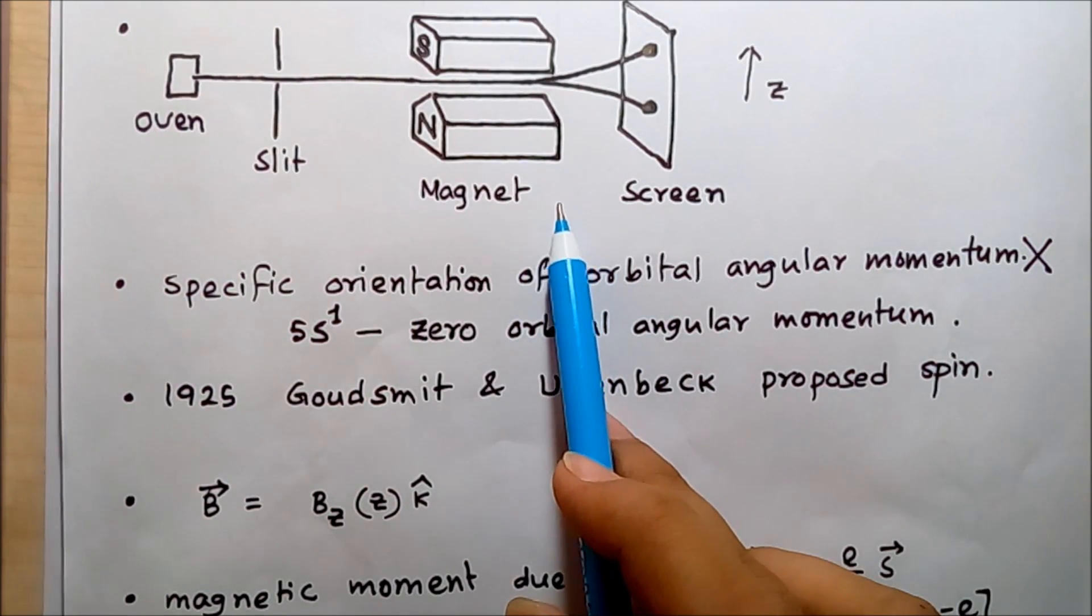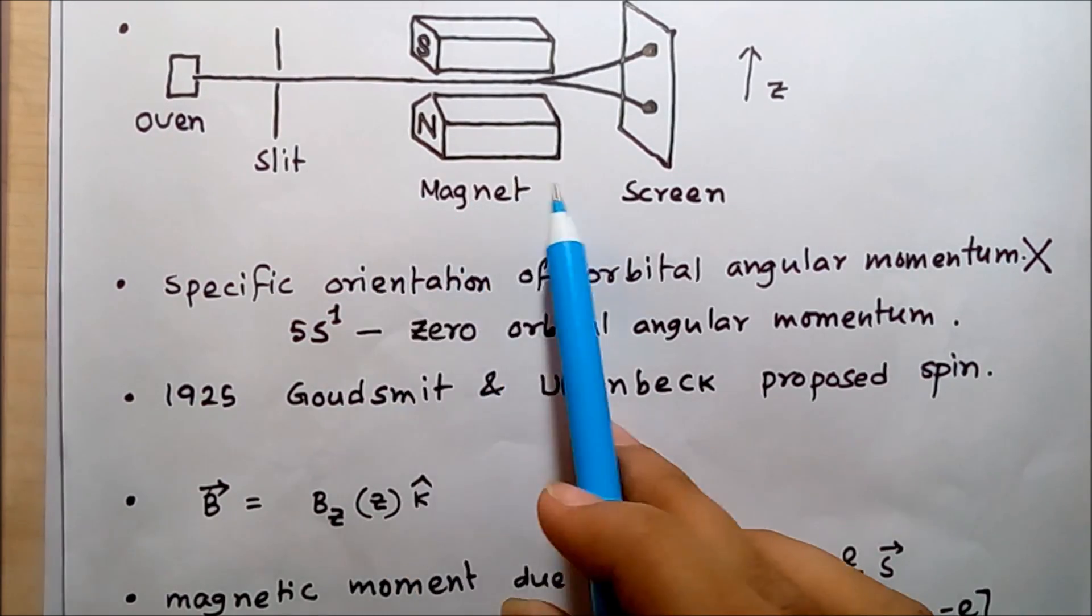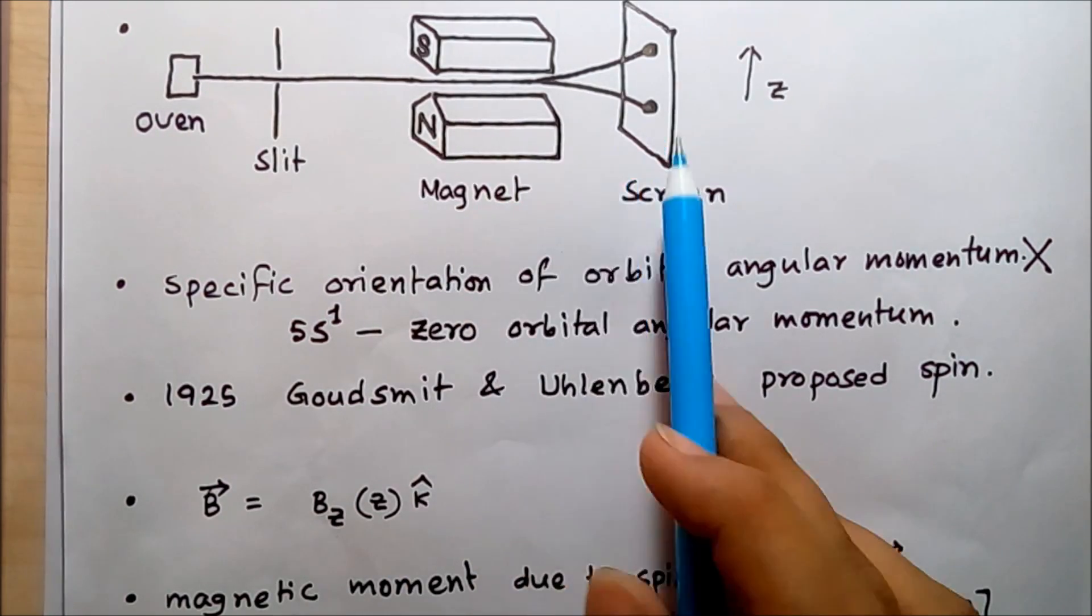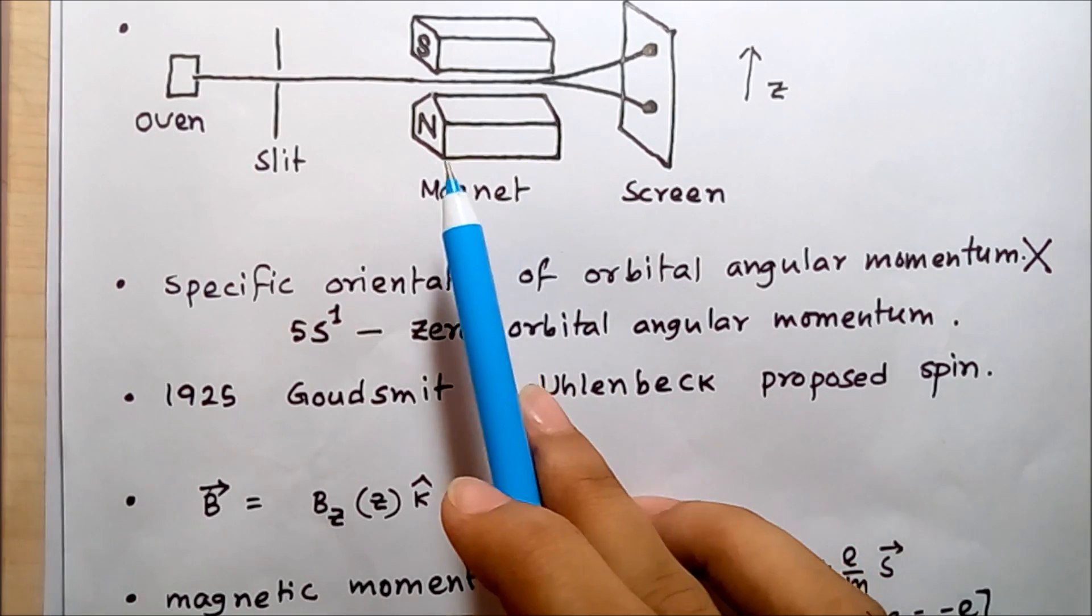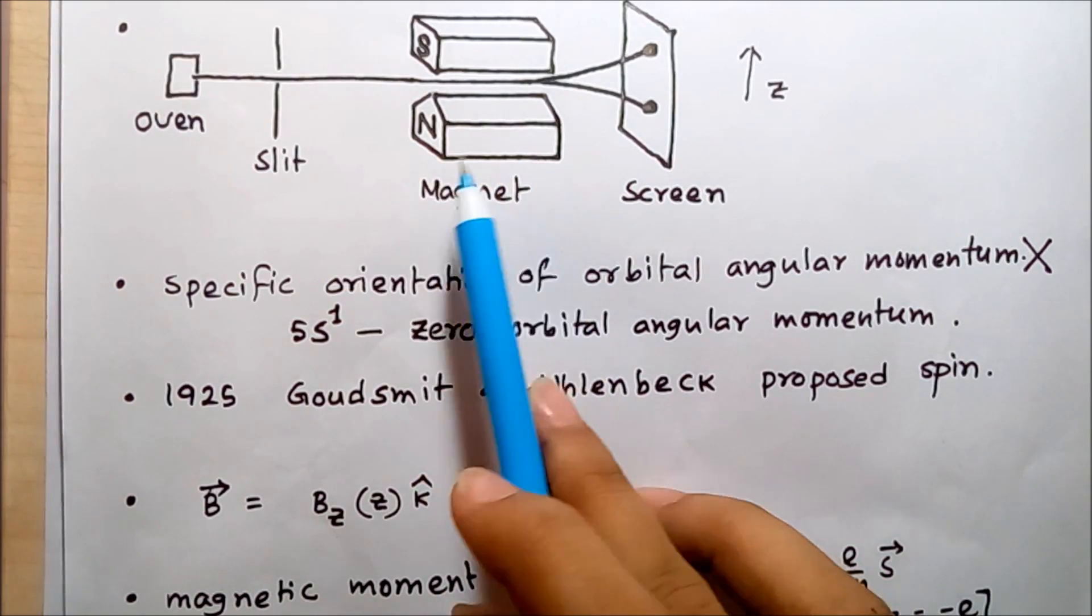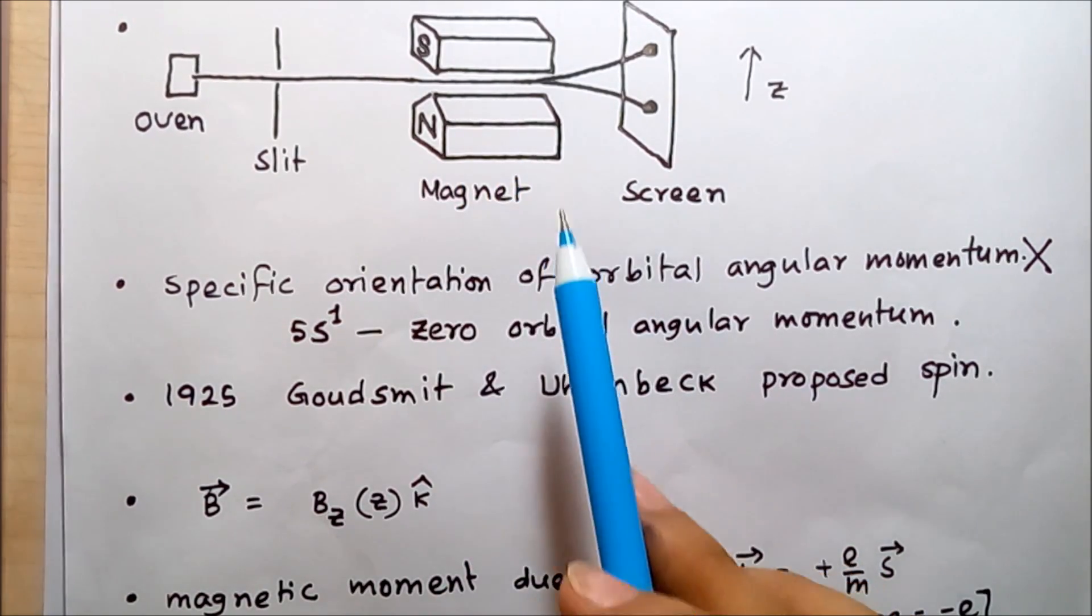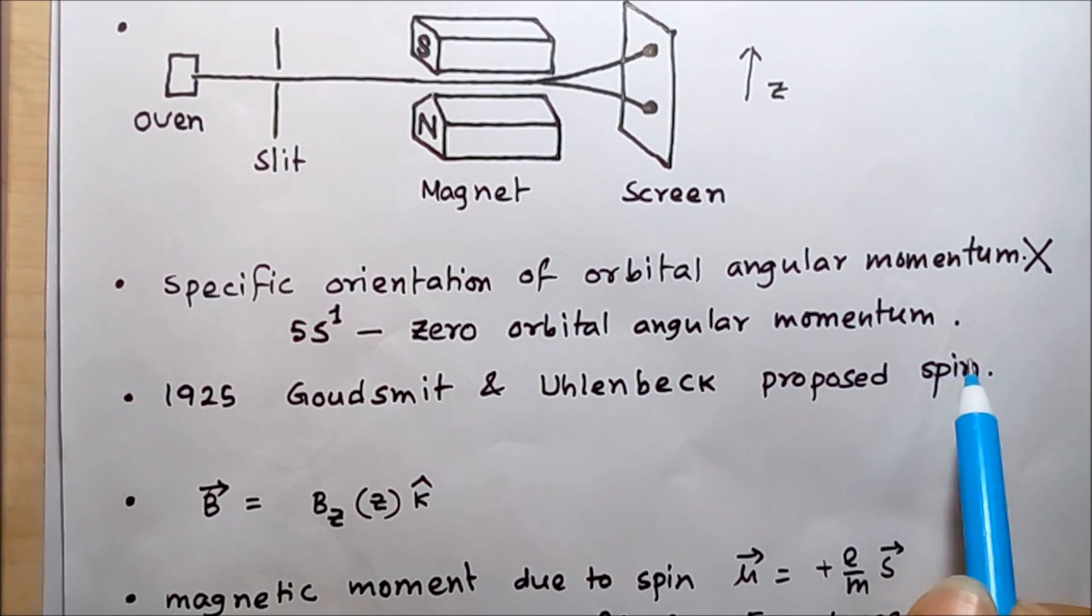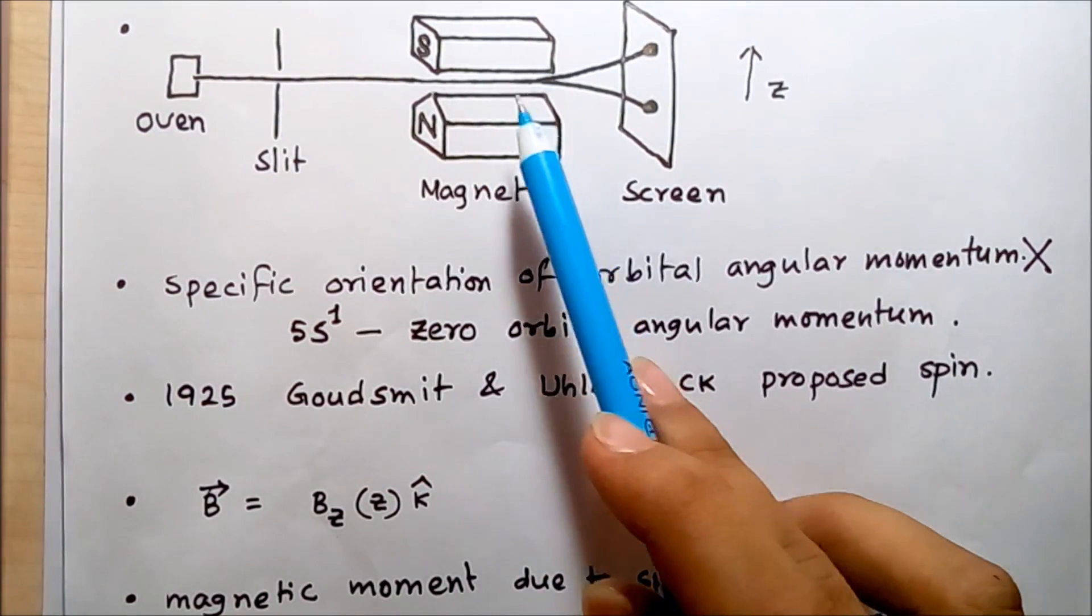There are only two factors in this experiment that influence the result: one is the magnetic field produced by the magnet, and the other is how the proposed spin angular momentum of the electron interacts with this magnetic field.